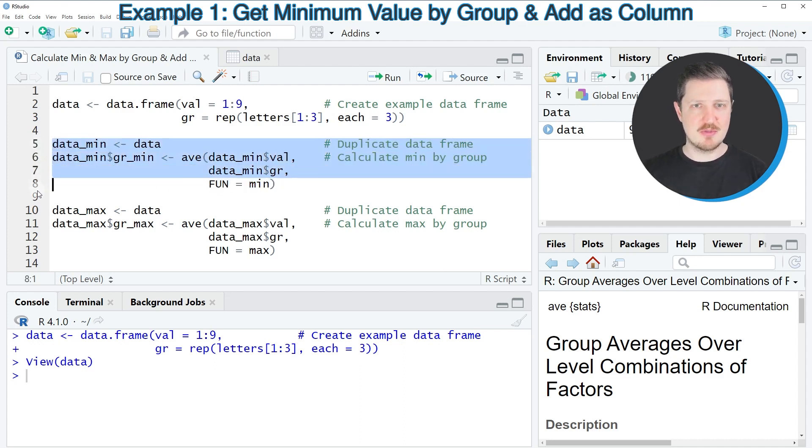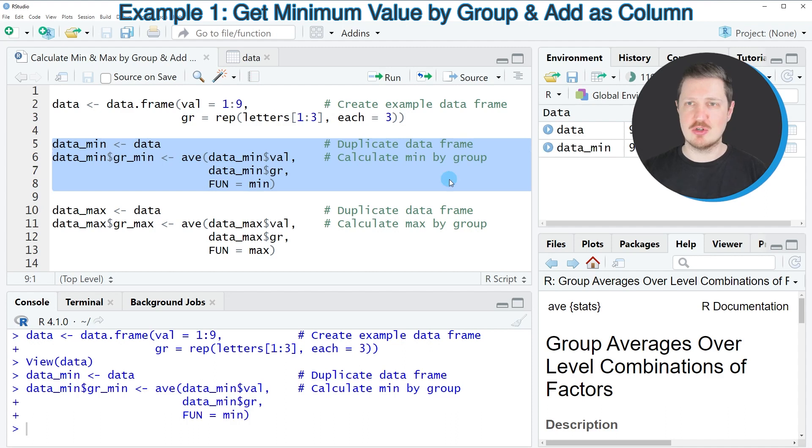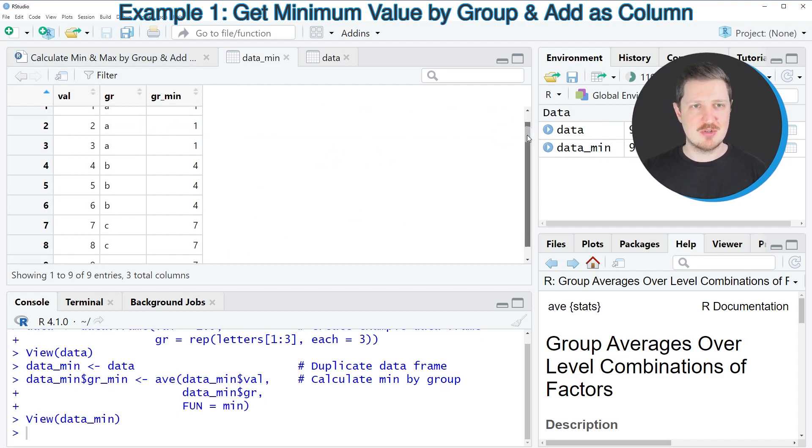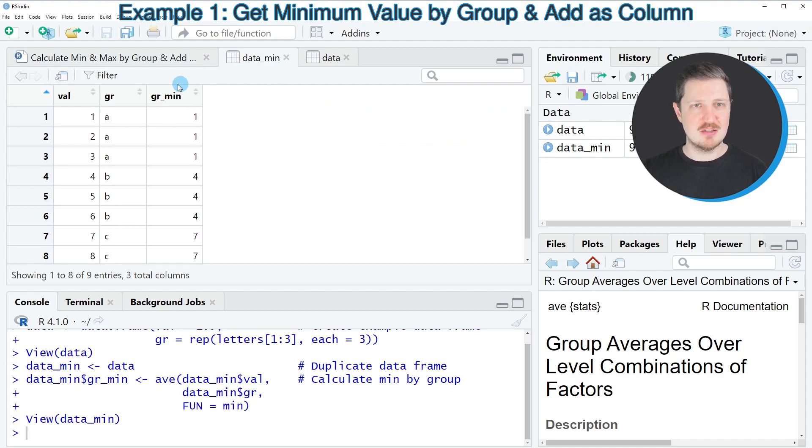So after running lines 5 to 8 of the code a new data frame called data_min is appearing at the top right and if you click on this data frame a new window is opened which is showing our new data frame and as you can see we have added a new column to this data frame which is called grmin.